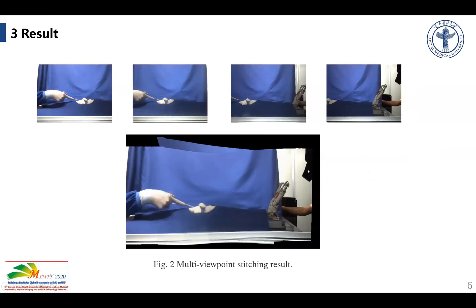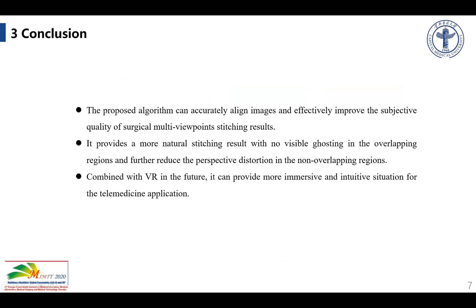Figure 2 shows the multi-viewpoint stitching results. The multi-viewpoint setup in our lab is still under construction and not yet completely established, so the edges are not natural enough. However, it shows there are no significant parallax errors and no perspective distortions in high attention areas, which proves the effectiveness of the algorithm in multi-viewpoint stitching. The proposed algorithm can accurately align images and effectively improve the subjective quality of surgical multi-viewpoint stitching results, providing more natural stitching results with no visible ghosting in overlapping regions and further reducing perspective distortion in non-overlapping regions.